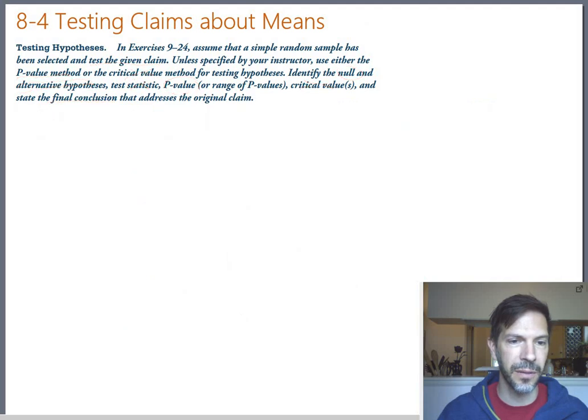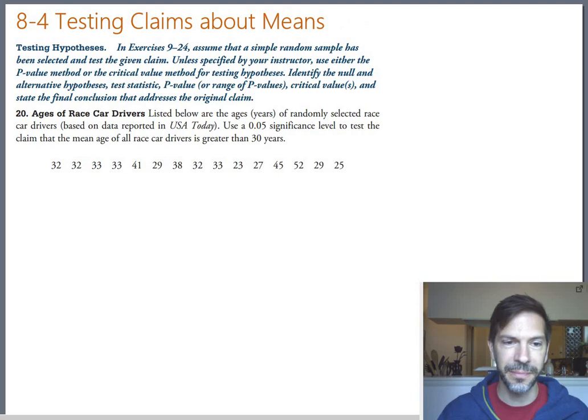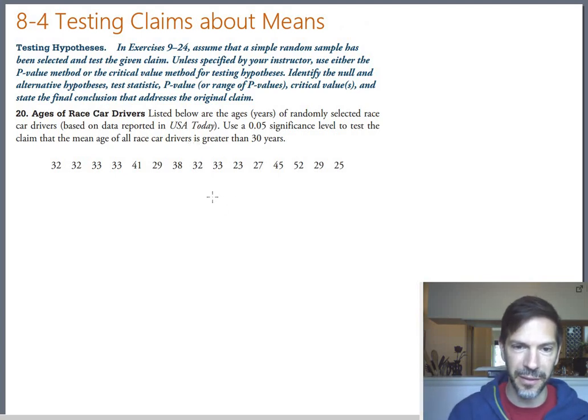Let's take a look at one more, this is number 20. The reason I want to do this one is it has data instead of statistics, but we can handle that. Listed below are some ages of race car drivers from USA Today. Use a 0.05 significance level, which is the normal significance level. Test the claim that the mean age of all race car drivers is greater than 30. The claim is that the mean is greater than 30. The opposite claim of course would be less than or equal to 30. The one with the equal sign is the null.